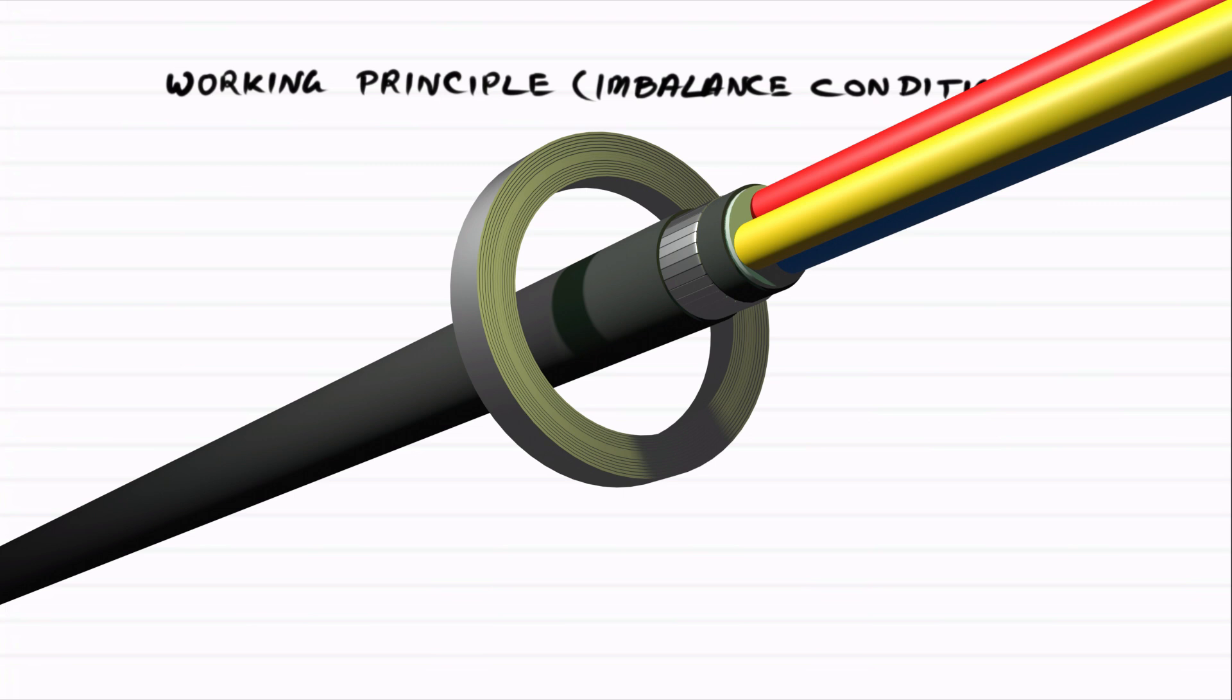The red phase produces flux. The yellow phase produces flux. And the blue phase also produces flux in the same CT core. Since these fluxes are 120 degrees apart, they cancel each other.